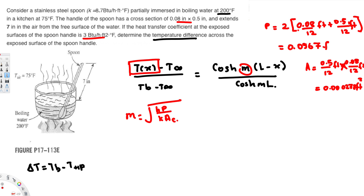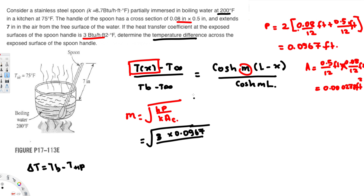Now plugging everything into the M equation: M = √(3 × 0.0967) / (8.7 × 0.000278). We'll keep consistent units throughout. Solving this gives M = 10.95 ft⁻¹.